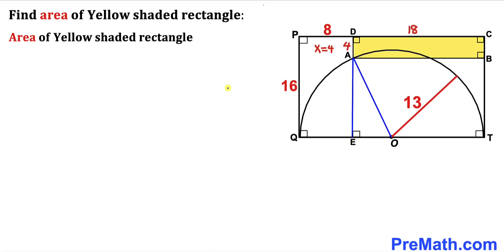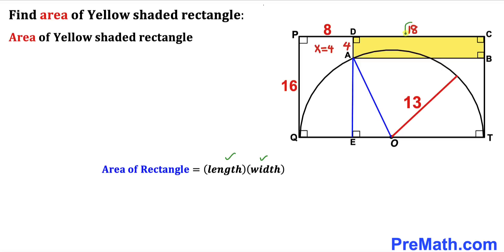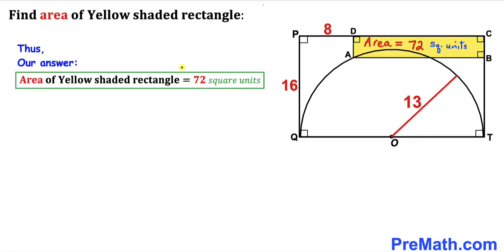Now for the final step: let's calculate the area of the yellow shaded rectangle ABCD. Using the formula Area = length × width, our length is 18 and our width is 4. Therefore the area of the yellow shaded rectangle is 18 × 4 = 72 square units. Thanks for watching and please don't forget to subscribe to my channel for more exciting videos.